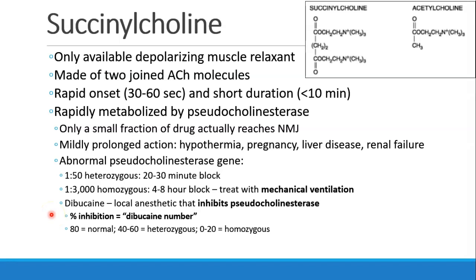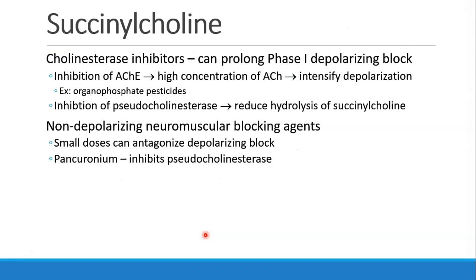Dibucaine is a local anesthetic that inhibits pseudocholinesterase. Patients will have a dibucaine number — the percent inhibition of pseudocholinesterase. Patients with normal pseudocholinesterase have 80 to 100% inhibition by dibucaine; heterozygous patients have 40 to 60%; and patients with two abnormal copies have 0 to 20% inhibition. You should not try to reverse succinylcholine blockade with a cholinesterase inhibitor, as it can actually prolong your phase 1 depolarizing block. Inhibiting acetylcholinesterase raises acetylcholine concentration and intensifies depolarization, and also reduces hydrolysis of succinylcholine.